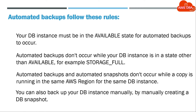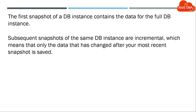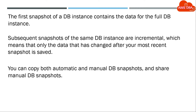You can also backup your DB instance manually by manually creating a DB snapshot. The first snapshot of a DB instance contains the data for the full DB instance. Subsequent snapshots of the same DB instance are incremental, which means that only the data that has changed after your most recent snapshot is saved. You can copy both automatic and manual DB snapshots, and share manual DB snapshots.